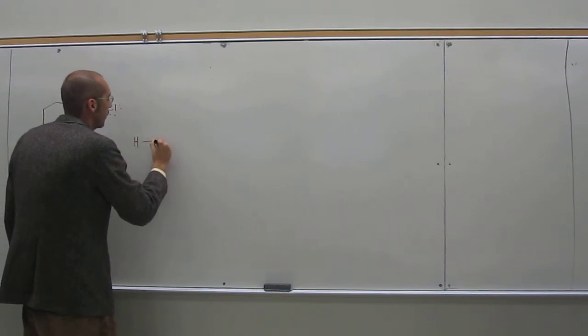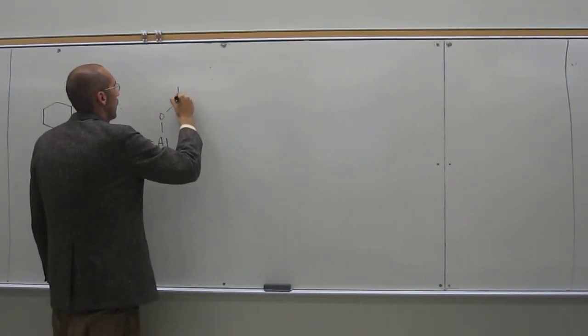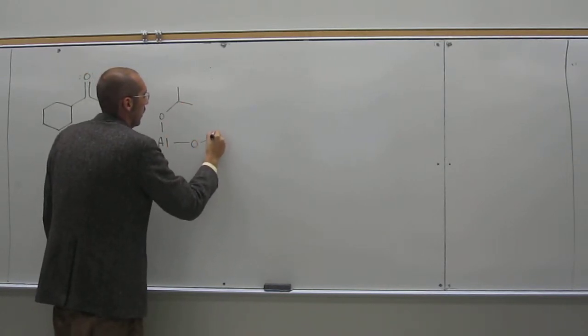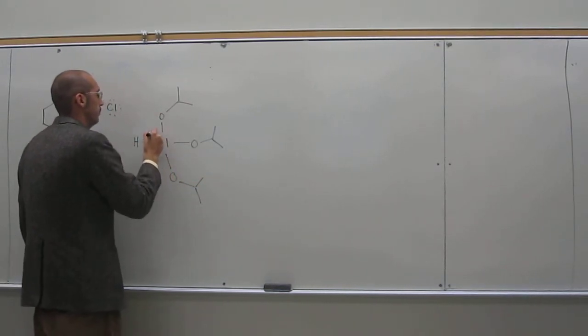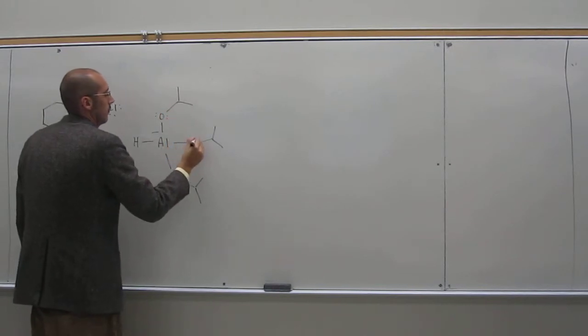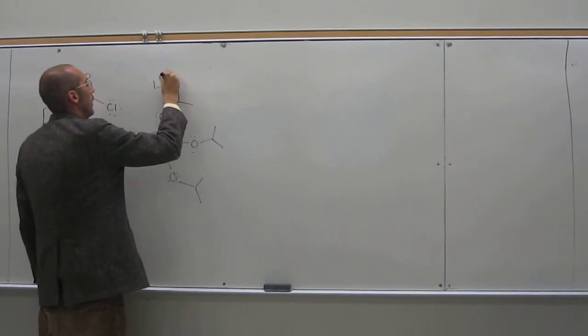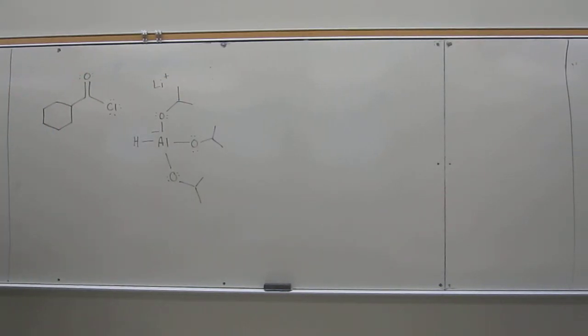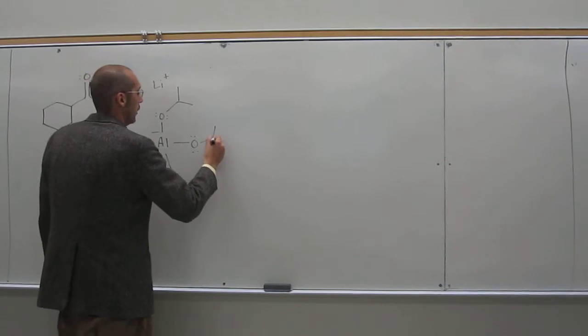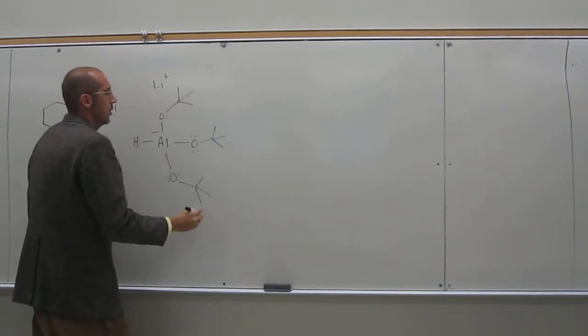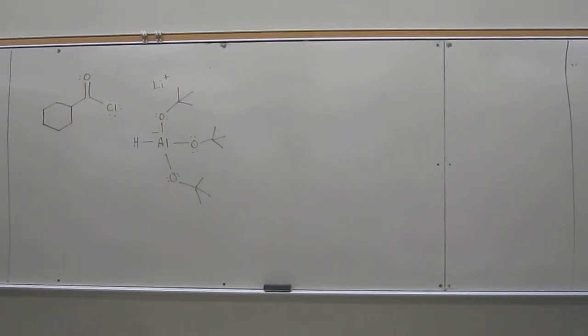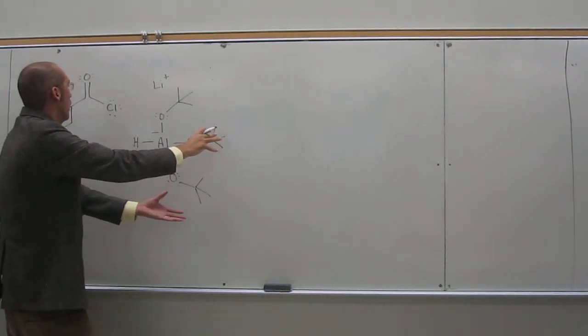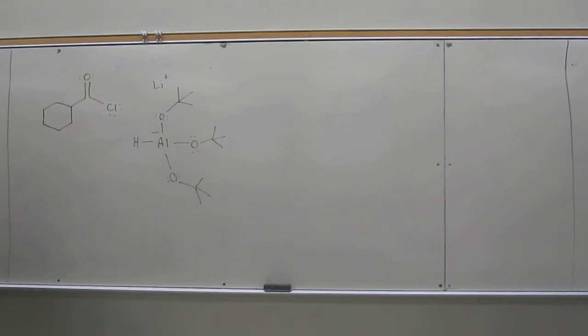So the hydride reagent looks like this. And then Li-plus, of course, is the counter ion. You're missing some methyl groups. Just one more, oh, sorry. So you have these tert-butoxides, right? Because it's very bulky. So what these will do is help it react with these things that are out flapping outside them on the edges of the molecule, on the periphery.